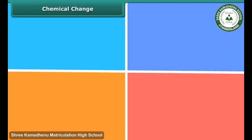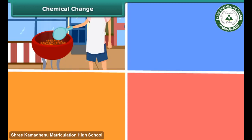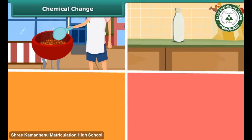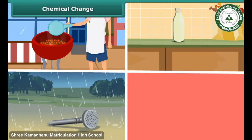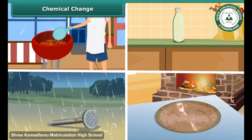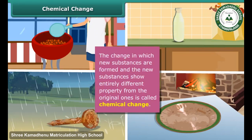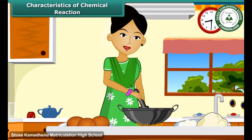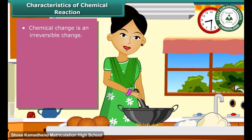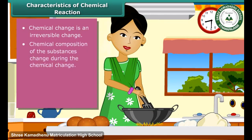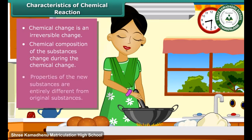Chemical changes include the burning of coal, the spoilage of milk, rusting of iron, and formation of green film on copper. A substance undergoes a chemical reaction during a chemical change. For example, your mother makes puris from the dough of wheat flour — can you get back the dough from the puri? No, this chemical change cannot be reversed.